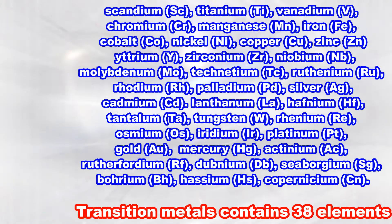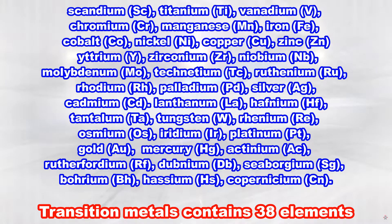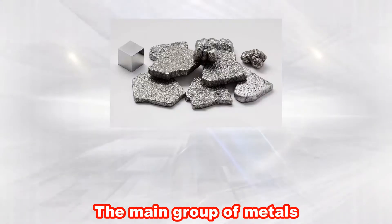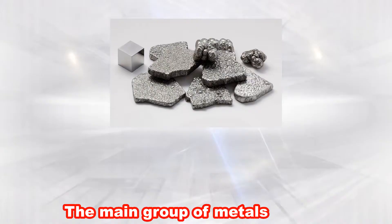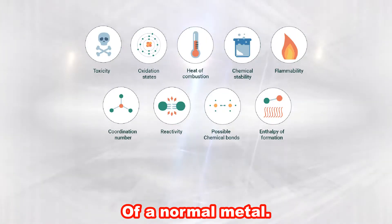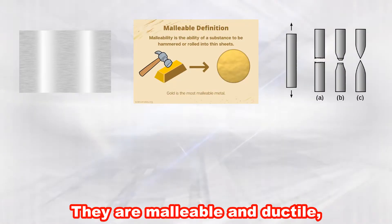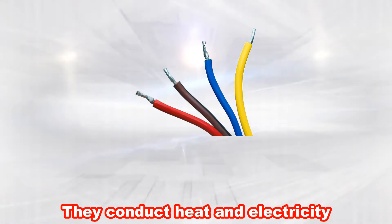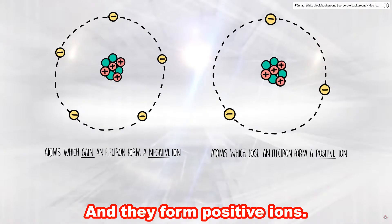Transition metals contain 38 elements, which makes it the family with the most elements. Transition metals are pretty much the main group of metals since they have all the properties of a normal metal. They are silvery white, malleable and ductile, they conduct heat and electricity, and they form positive ions.